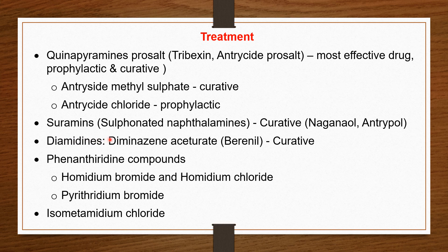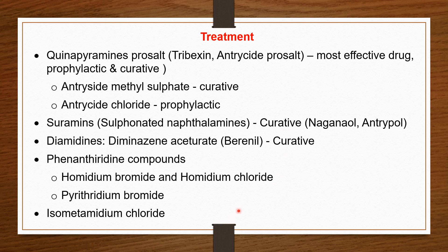Other drugs include: Suramin (sulfonated naphthalamines), which is curative; Naganol and Tripol; Diminazene aceturate (Berenil), which is also curative; and phenanthridine compounds such as Homidium bromide, Homidium chloride, Pyrithidium bromide, Isometamidium, and Isometamidium chloride — these other drugs are curative. The drug of choice and most effective drug is quinapyramine prosalt. In the treatment, along with specific drugs, certain symptomatic treatment and supportive therapies are also to be carried out.